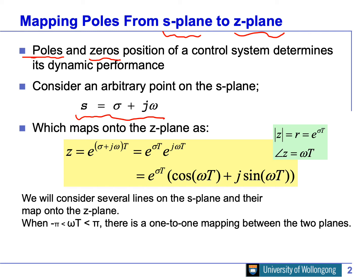In the S-domain, s equals sigma plus j*omega. We draw the horizontal axis as the real component and the vertical axis as the imaginary part, so s is a point in the S-domain. We already know the relationship between s and z: z equals e^(sT), from Week 9. Substituting s in, we get z equals e^((sigma + j*omega)*T).